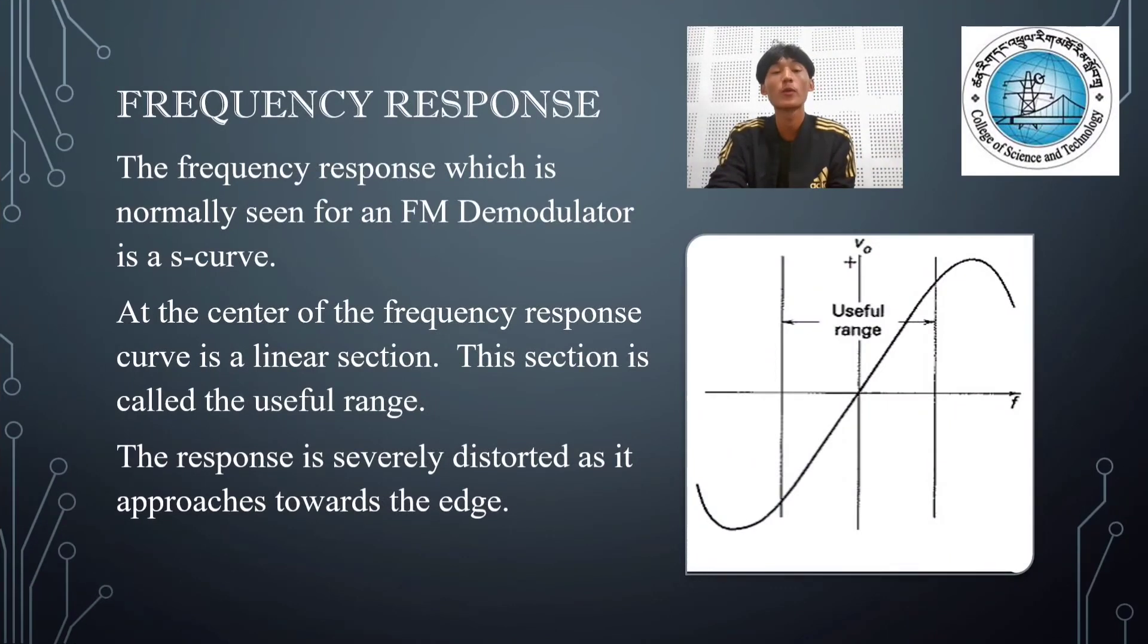Now I'm going to talk about the frequency response, advantages, and disadvantages of the ratio detector. First, the frequency response. The frequency response which is normally seen for an FM demodulator is an S curve. Here we can see that at the center of the frequency response curve, there's a linear section. Therefore, this linear section is called the useful range. The response other than the linear section is severely distorted as it approaches towards the edge.